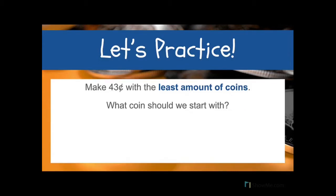Let's practice this one. This time we're just going to write the letters for our coins and do a running total up top. We have to make 43 cents with the least amount of coins. What coin do you think we should start with? I agree — let's start with a quarter. Here's my quarter and my quarter is worth 25 cents. Can I add another quarter? No, because that would get me to 50 cents and we're only going to 43 cents.